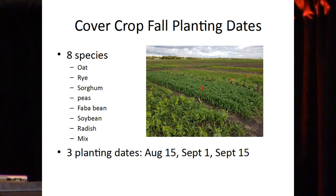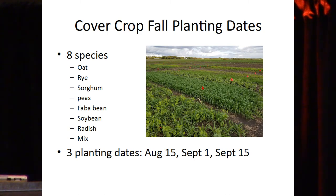Another experiment Virginia is running looks at planting dates. We've got eight different species — well, one of them is actually a mix of all the species — planted at three different dates: August 15th, September 1st, and September 15th. It's really exciting because the experiment actually worked this year — we had rain in September and everything grew. By September 15th, we had cotyledons up and that was about it; by September 1st, we had things with one or two leaves.